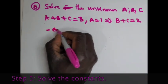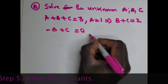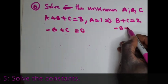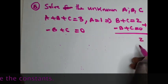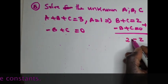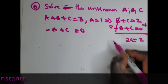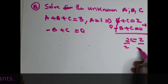But we have -B + C = 0, so now you have two linear equations. Just add them and you get 2C. The left side is zero, so C = 1.